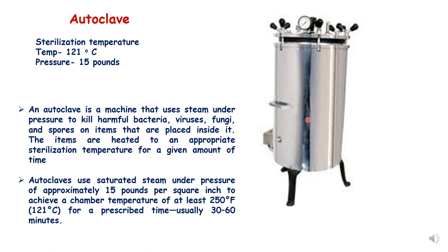Now, what is an autoclave? This is an autoclave. It is used to sterilize equipment, glassware, chemicals, media, and other things used in a tissue culture lab. An autoclave is essentially a larger pressure cooker — a machine that uses steam under pressure to kill harmful bacteria, viruses, fungi, and spores on items placed in a pressure vessel. Items are heated to an appropriate sterilization temperature for a given amount of time.